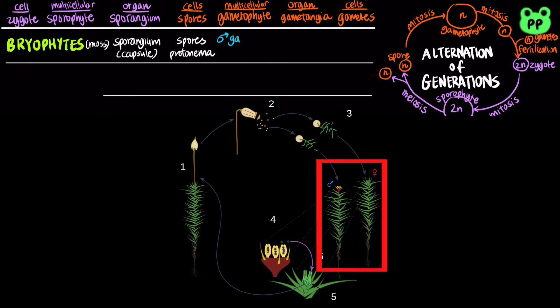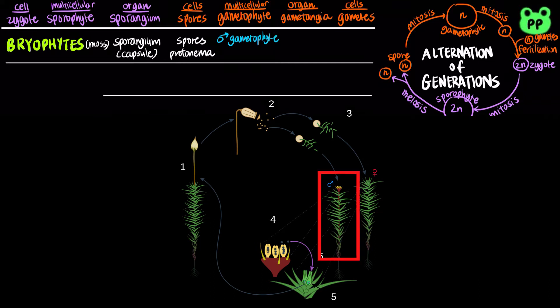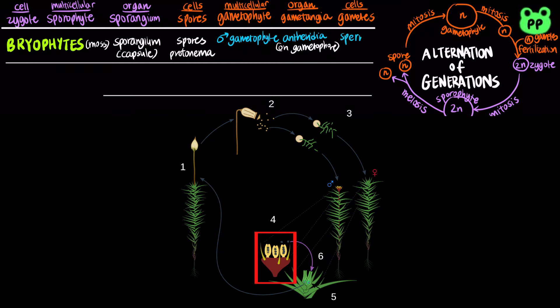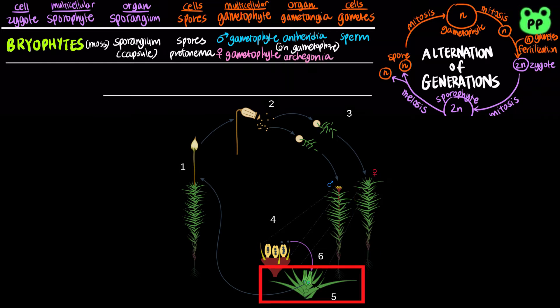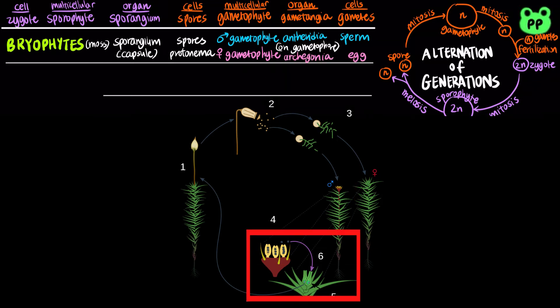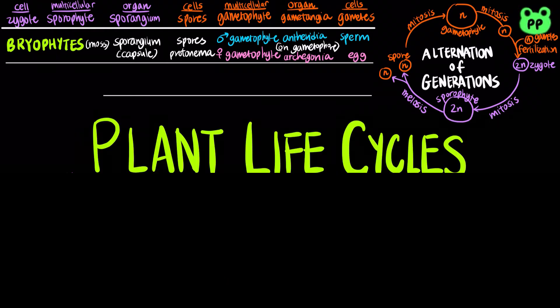Spores give rise to protonema, which develops into male and female gametophytes. The male gametophyte produces flagellated sperm in the organ antheridia, which is located on the gametophore. The female gametophyte produces an egg in the organ archegonium. The sperm swim through a film of water to reach and fertilize the egg, producing the diploid zygote.